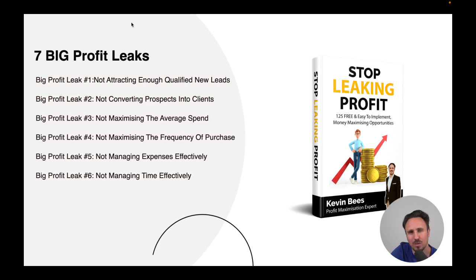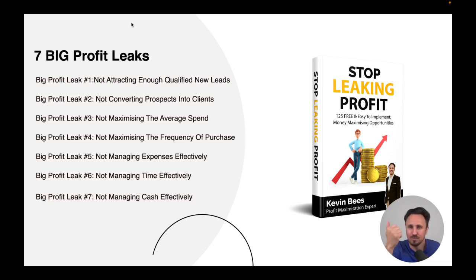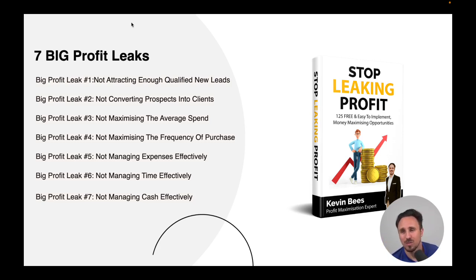Number seven is not managing cash effectively. This isn't necessarily directly related to profit, but the more cash you have on hand, the more you can invest in profit-producing assets. Do you know where your cash is? A lot of people have their cash tied up in stock — they're holding too much stock, not getting customers to pay fast enough, and paying their suppliers quicker than they need to. These are three main areas to look at. Are you managing your cash effectively?